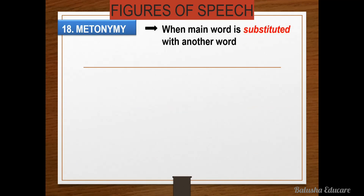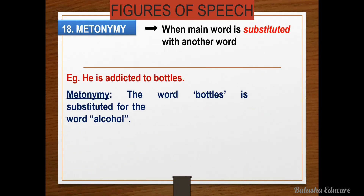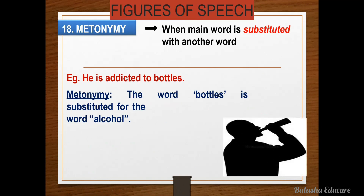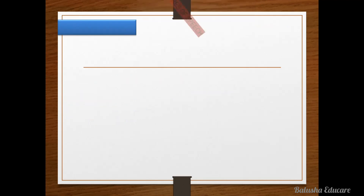The next figure of speech is metonymy — when a main word is substituted with another word. For example, 'He is addicted to bottles' — metonymy figure of speech, because the word 'bottles' is substituted for the word 'alcohol.' Here 'bottles' is the substitute word; alcohol can be kept in bottles, so the word is substituted with another related word. This is known as metonymy figure of speech.